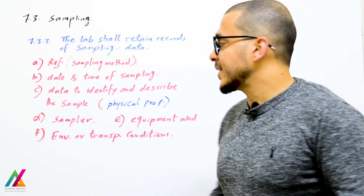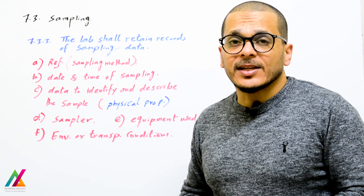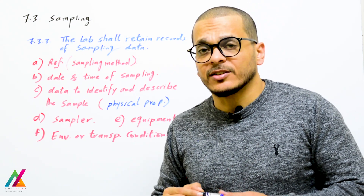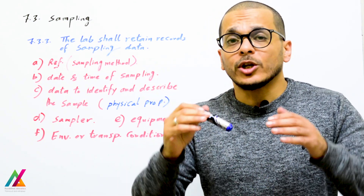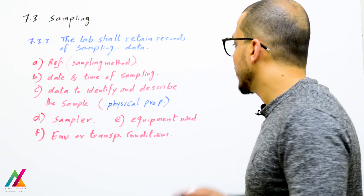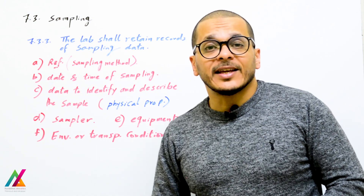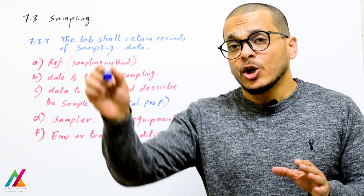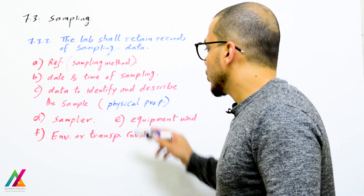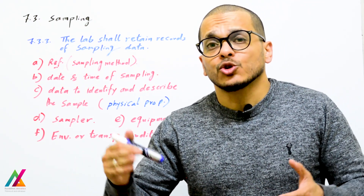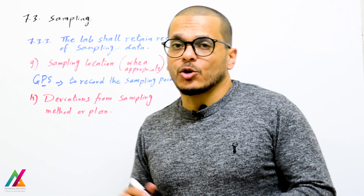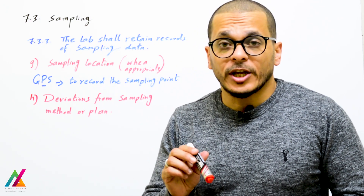Records shall include: date and time of sampling, data to identify and describe the sample and its physical properties, which parameters were collected for each sample, the sampler responsible at the time, and equipment used for sampling. Environmental and transportation conditions shall also be recorded, as environmental conditions can affect the validity of the sample. If there was a problem during transportation, this helps determine whether sampling needs to be repeated.